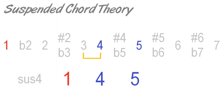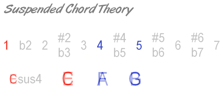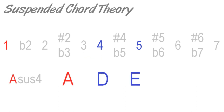Suspended fourth chords are typically abbreviated as sus4. For example, C sus4, E sus4, A sus4, etc., all indicate that the third has been replaced with a fourth.